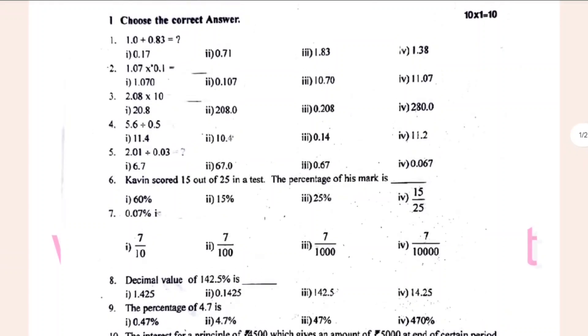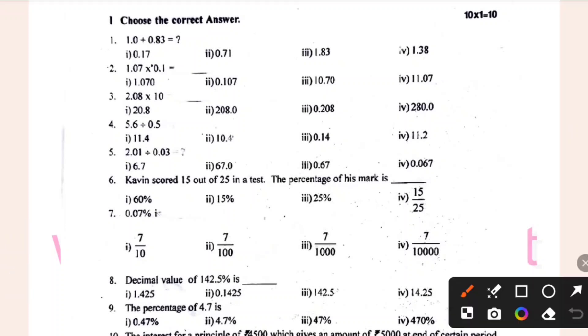1.0 plus 0.83 is dash. It's simple. 2nd one, 3rd one, 4th one, 5th one, 6th one. You can find the first plus, multiply and divide.